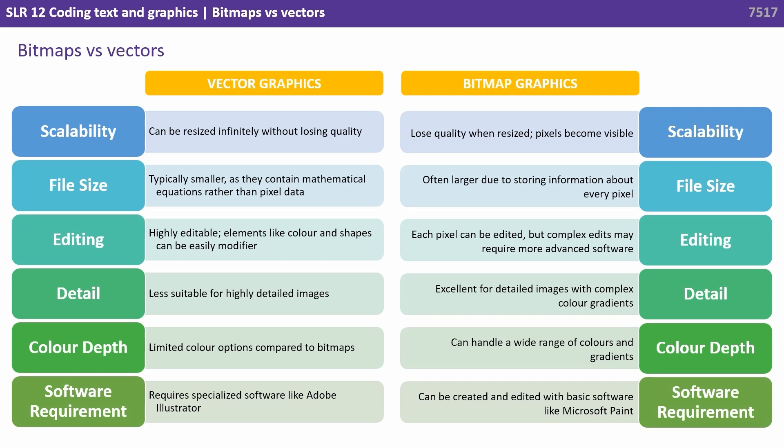We typically use software like Adobe Illustrator — a special dedicated software for editing vectors. Whereas bitmap images can be edited by a much wider range of programs, including simple ones such as Microsoft Paint.